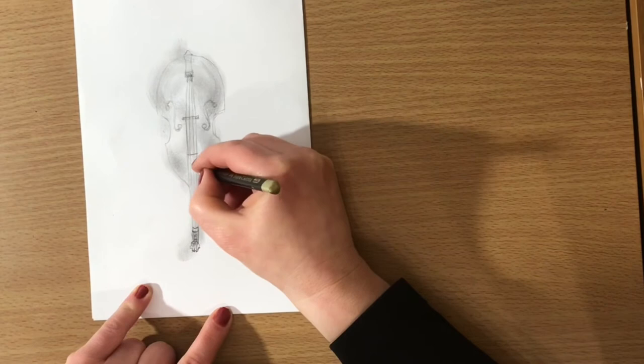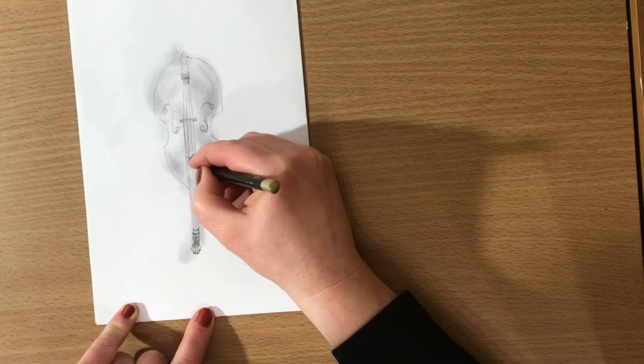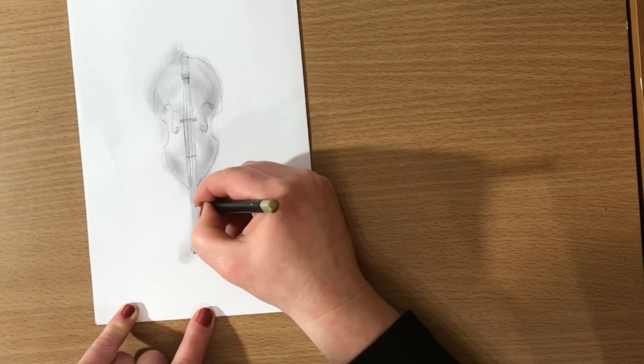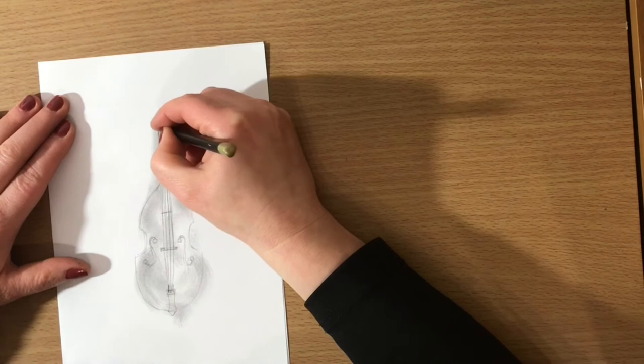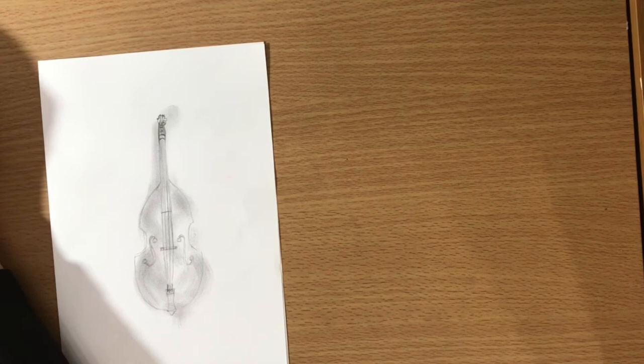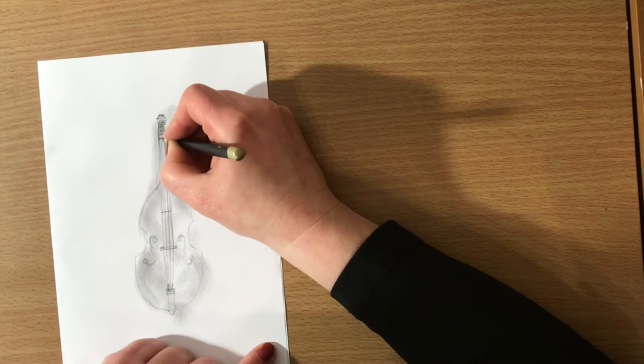On the neck and the fingerboard you can use a darker color as it is usually black. And then the strings should be of a very light color. I will do this at the end of the drawing. I will transform the strings in white on the fingerboard region. And I will leave them black on the lower part.